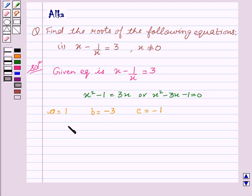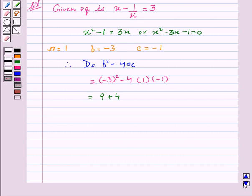Now we can calculate the value of d that is b square minus 4ac. This means d equal to minus 3 square minus 4 into 1 into minus 1. This implies d equal to 9 plus 4. Therefore, d equal to 13.